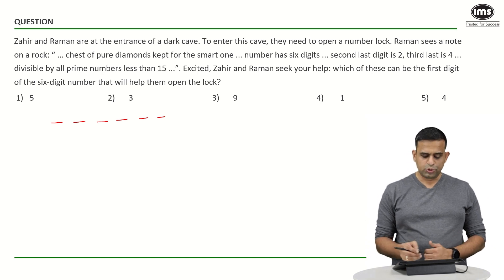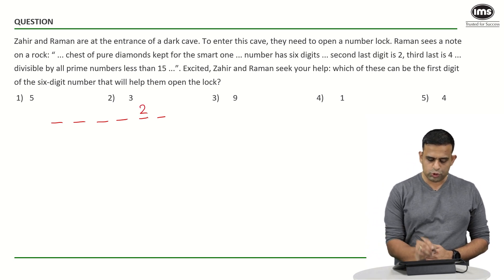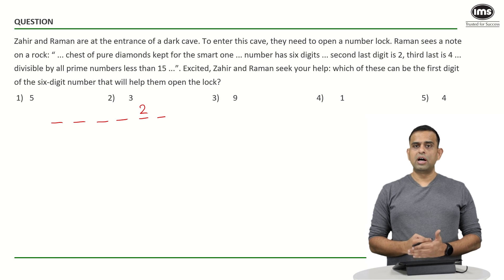The second last digit happens to be a 2. So this place happens to be a 2. The third last happens to be a 4.